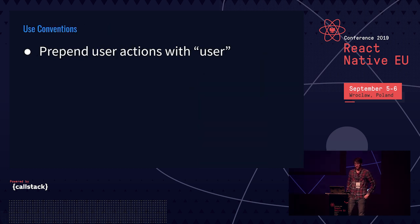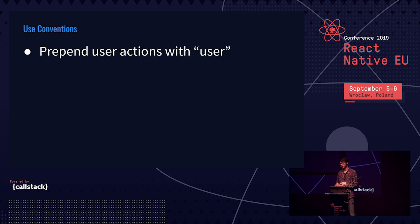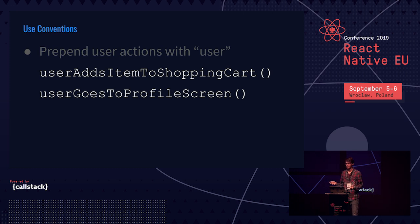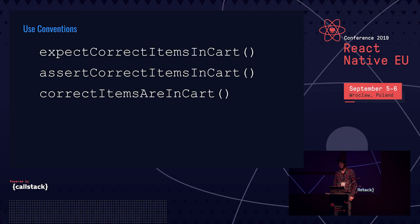It's a good idea to use conventions in your end-to-end tests. Since you're testing from the user perspective, prepend user actions with the word 'user' to make code more readable. For example, 'user adds item to shopping cart' or 'user goes to profile screen' is more readable than finding elements directly. You can also use conventions for expectations — prepend them with 'expect', 'assert', or just make a statement like 'correct items are in cart.'